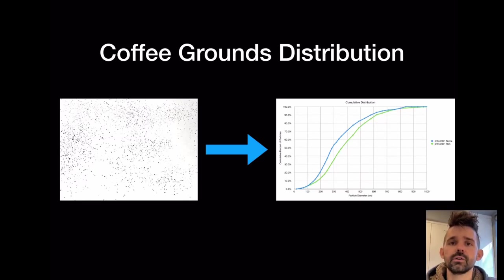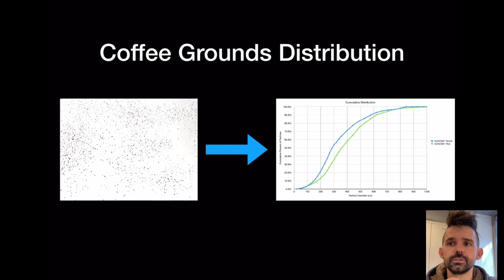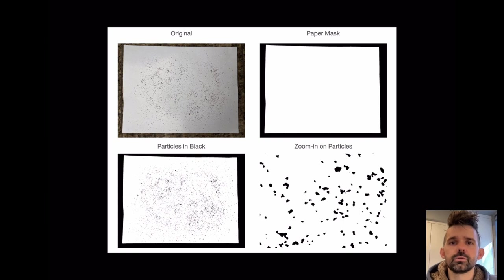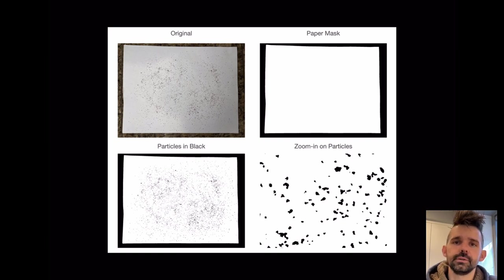Let's talk about measuring coffee grounds distributions to better understand grinders and how coffee works. This is a typical image and the aim is to get a cumulative distribution out. You can use a laser particle scanner to do this, but they're very expensive. One way you can do it at home is using imaging.